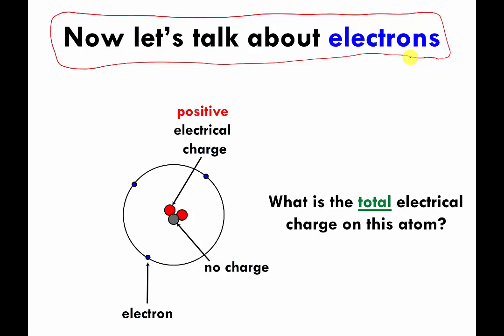Just a refresher: the protons I am going to draw as these big red circles. I said in an earlier video that they have something called an electrical charge, and the type of electrical charge they have is called a positive electrical charge, represented with a little plus sign. Usually what people say is that the proton has an electrical charge of plus one. The reason they pick one is because it's an easy number to remember, and they want to use that to contrast it with the electrical charge of the electron.